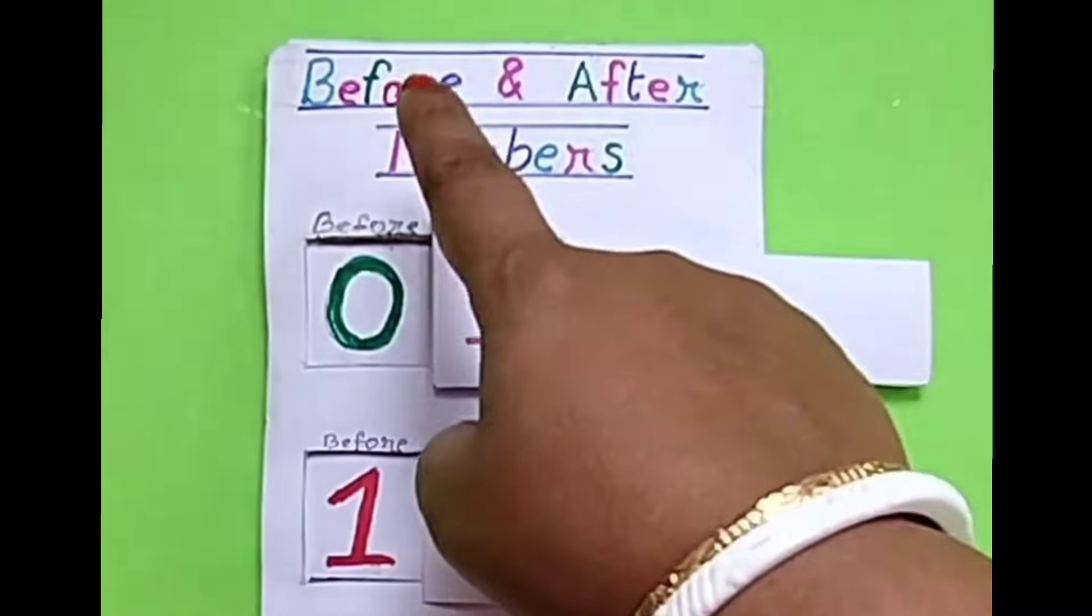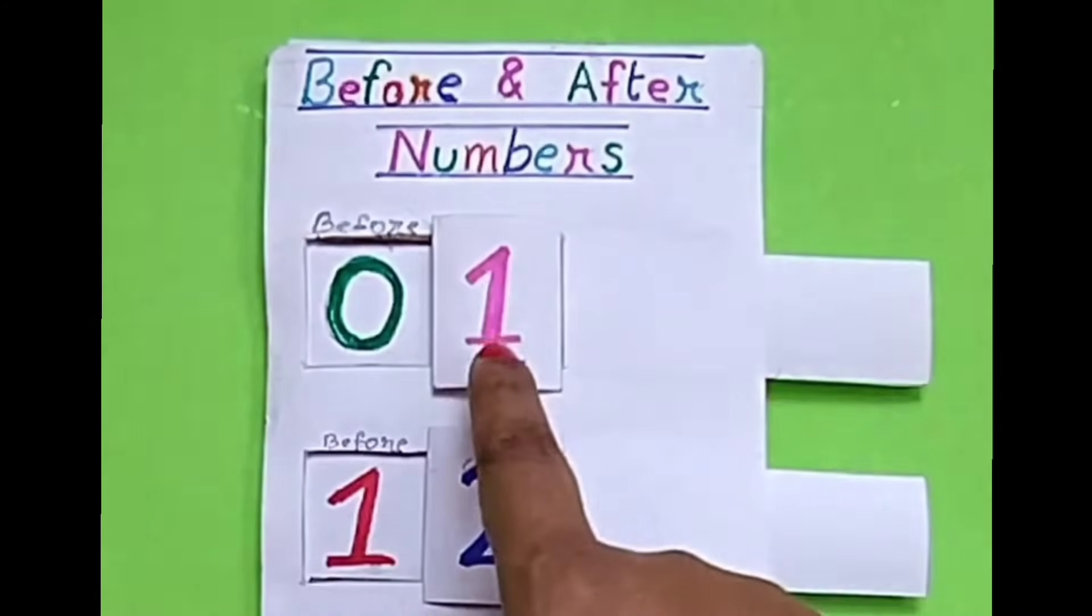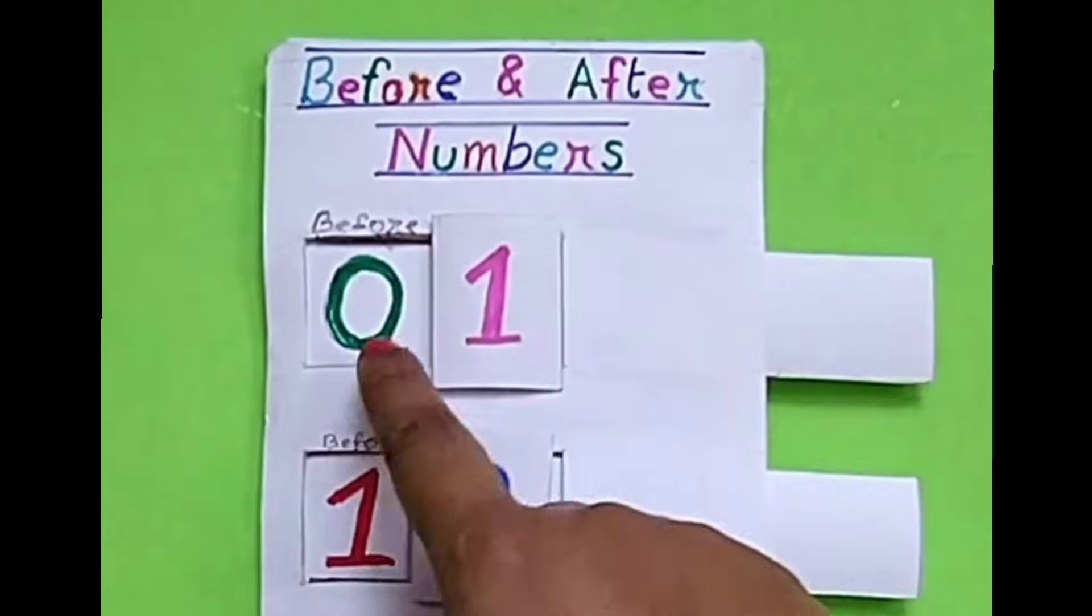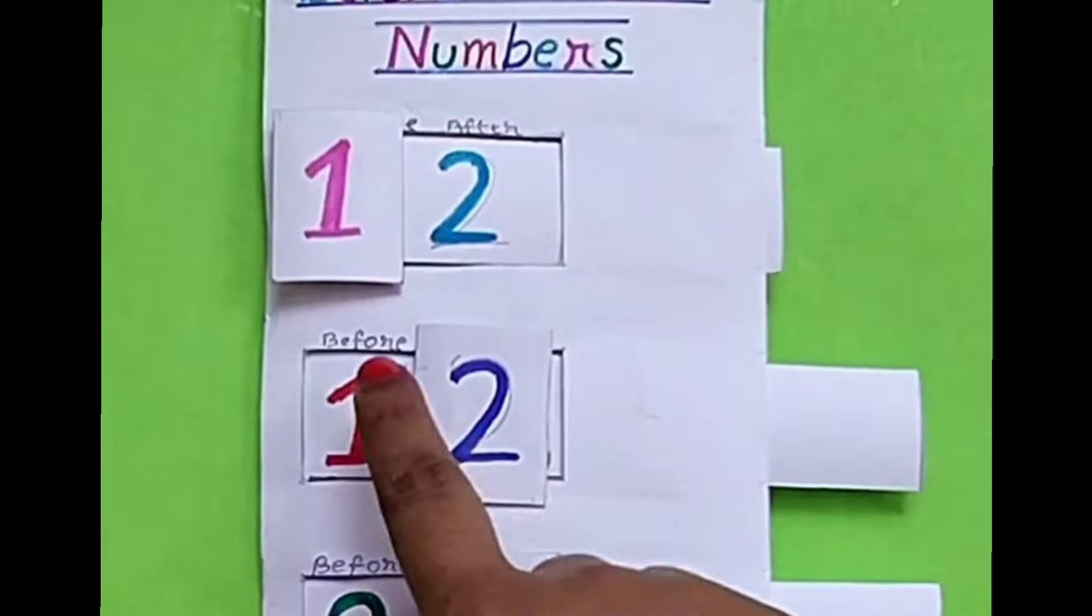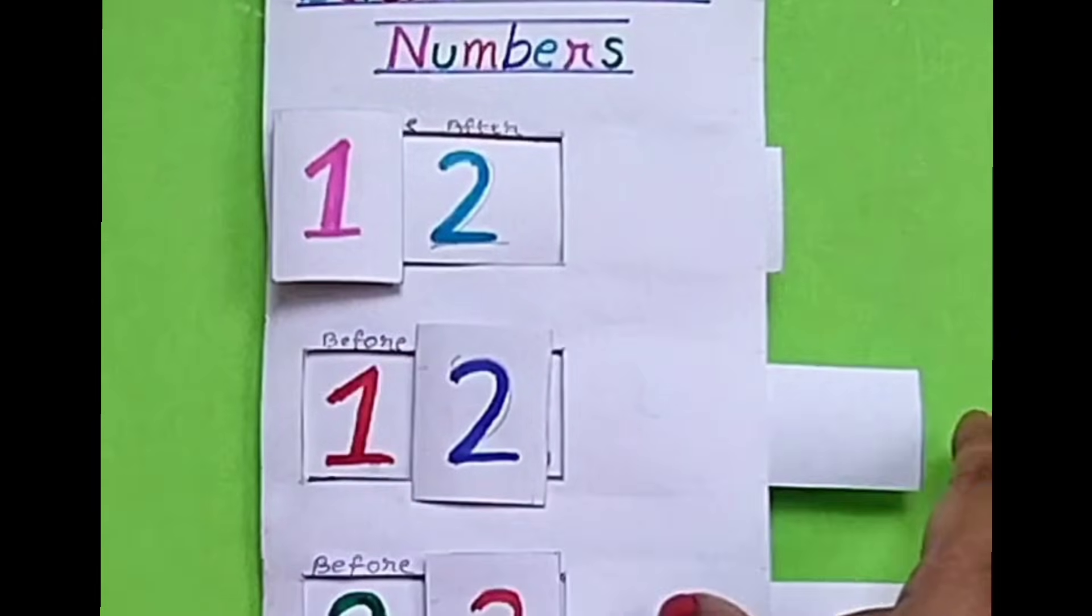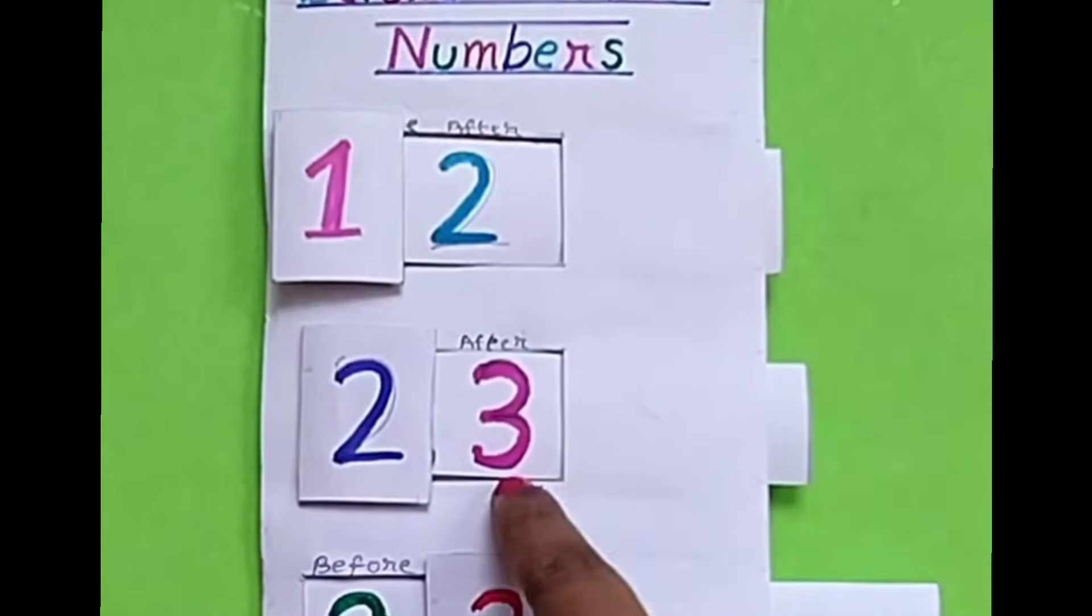Before and after numbers TLM. The number is 1, before number is 0 and the after number is 2. The number is 2, before number is 1 and the after number is 3.